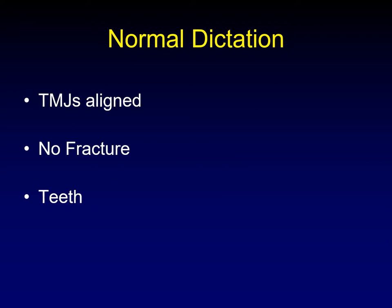So what goes into a normal dictation for a panorex? I like to talk about three things. The first is the temporomandibular joints — I will at least mention that the TMJs are well aligned, with no subluxation or dislocation. These joints are discussed in much more detail in the lecture on TMJ MRI. The next thing I discuss is the presence or absence of mandibular fracture. And then the third thing, which we frequently overlook on facial bone CT, is the teeth themselves. So we'll spend more time talking about the teeth in this lecture.